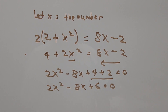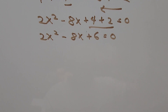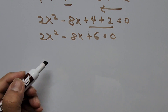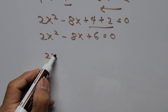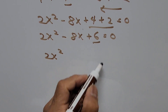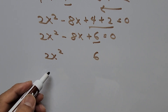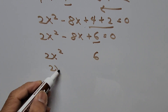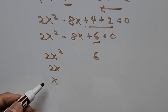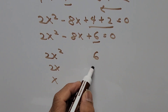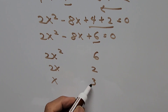To solve for X we can use factoring or the quadratic formula. Let's start with factoring. We have 2X squared as the first term and 6 as the third term. The factors of 2X squared include 2X and X, and the factors of 6 include 2 and 3, since 2 times 3 is 6.